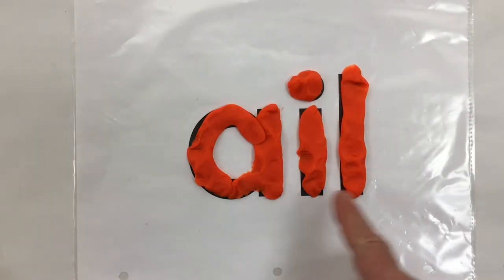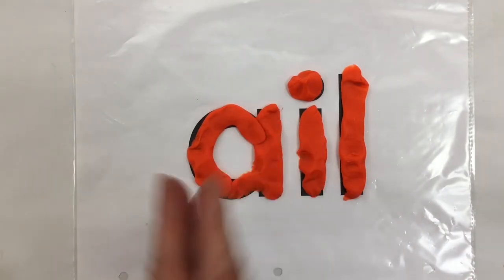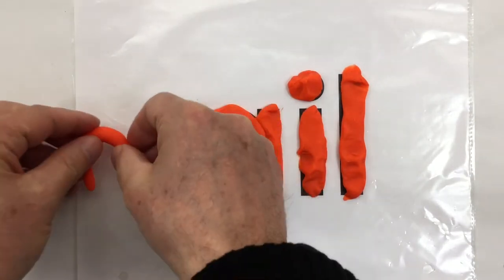Okay, I've got my A-I-L covered. I've got my 'ail' ending. Now we'll add some letters to the front.